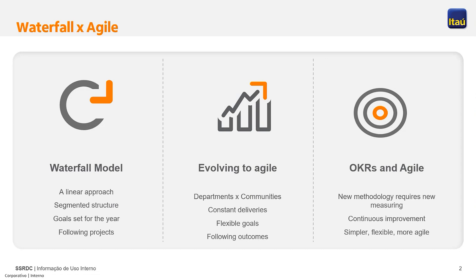The agile model is very collaborative and requires everyone working together. Another big feature is constant deliveries. Instead of one big project at year-end, we take a big problem and break it into minor parts — sprints. Every two or three weeks we have a tiny delivery and check if we're on the right path.